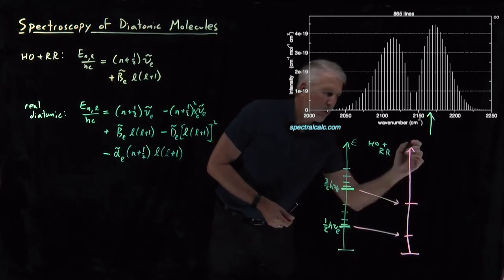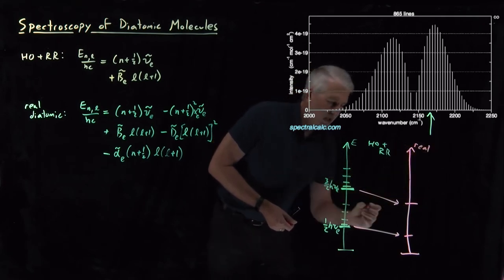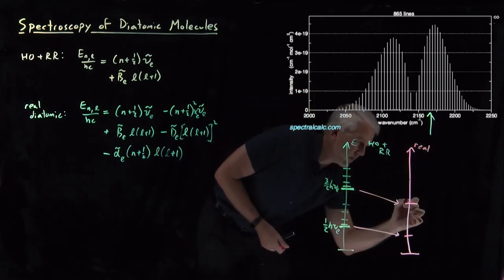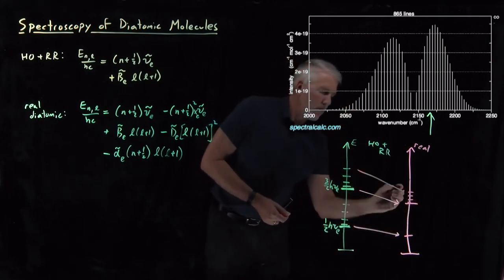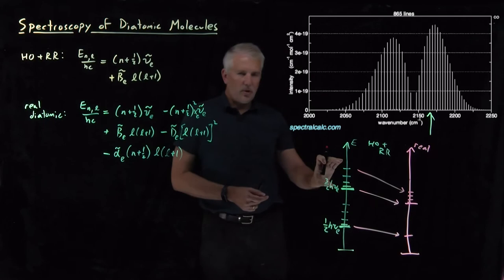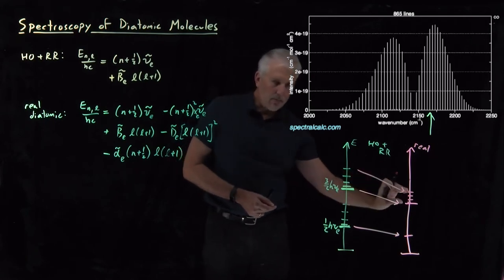So these don't get layered on in exactly the same way for the real molecule. And this is difficult to see from the scale of my drawing, but this range of rotational energies gets compressed by a little bit for the real molecule.